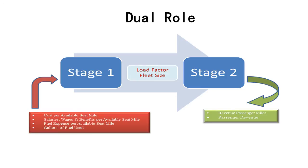This is another example of dual role performance metrics. In the middle, you have the load factor and fleet size of a particular airline. These two performance metrics are the outputs or outcomes from the first stage, but they become the input factors, or Category 1 measures, for the second stage.